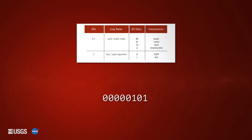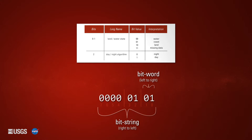The MODIS Thermal Anomalies and Fire Quality layer only uses 4 out of the 8 bits. The bit string is read from right to left. For example, the bit word for bit number 0-1, land water state, is 01, which means the pixel is of a coast. Bit number 2, day-night algorithm, is 1, which means the pixel is from the day.